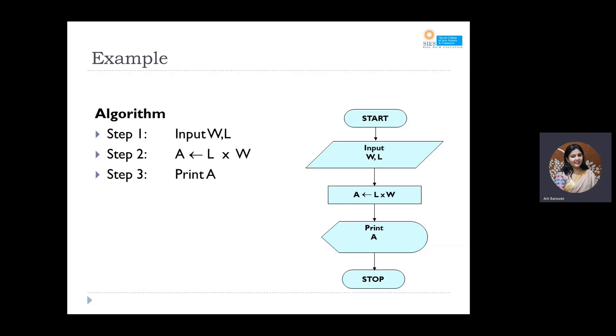Calculating the area which is length into width, and then finally we are printing the value of A, and last step is stop. So remember, whenever you are drawing a flowchart it should always have a start and stop state. And look at the way it is drawn—make sure that you use the right symbols.